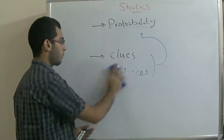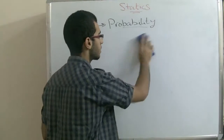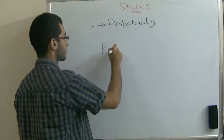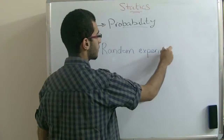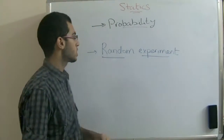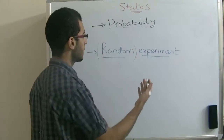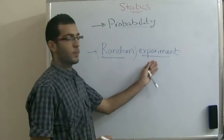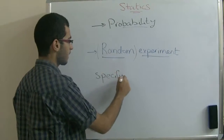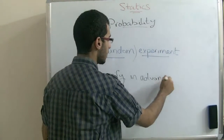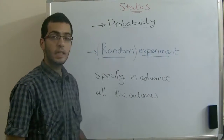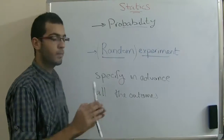Now we will know some definitions of terms that are common in probability, like something called the random experiment. A random experiment is an experiment which is done randomly to show the probability of something happening. It is an experiment in which we can specify in advance all the outcomes, but we cannot decide or define a certain outcome that will happen.